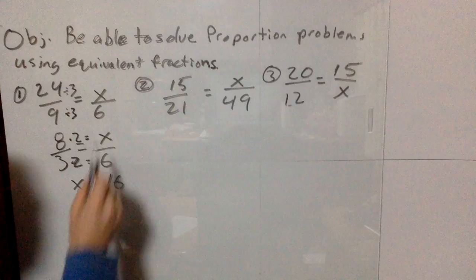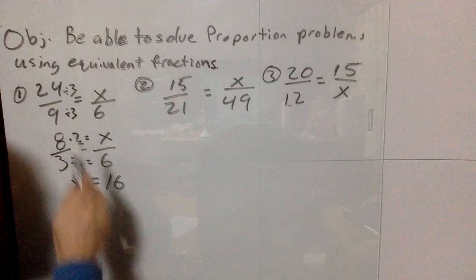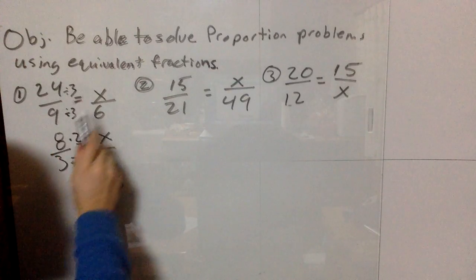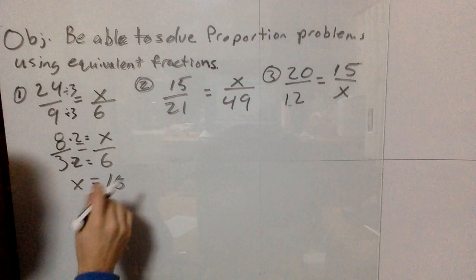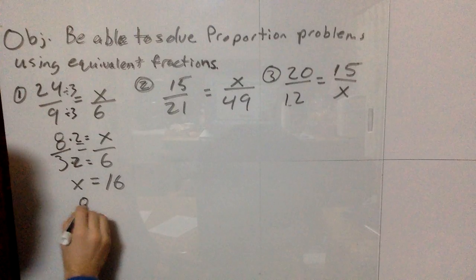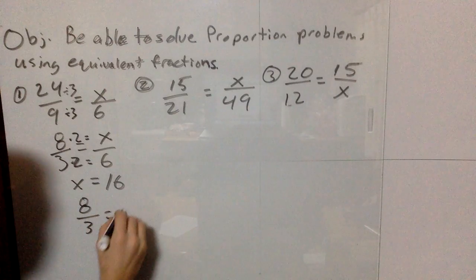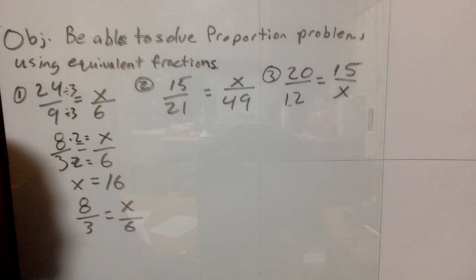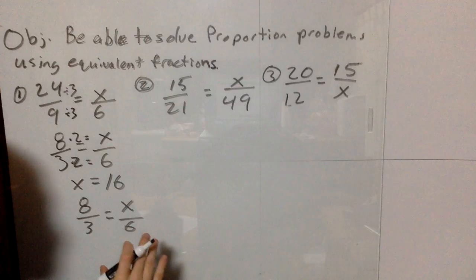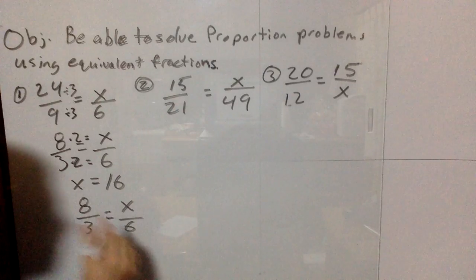The equivalent fraction of 24 over 9 is 16 over 6. Now I'll show you another way to do this. If you have 8 over 3 equals x over 6 and don't see the multiplier, you can use cross products.